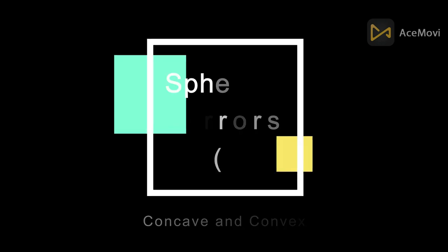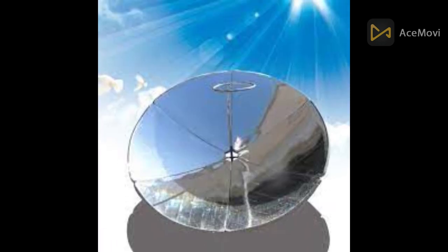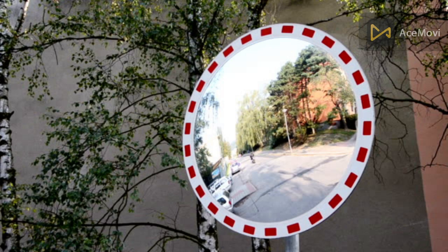Now we can know what are spherical mirrors. Spherical mirrors are mainly categorized into two groups: concave mirror and convex mirror. Let us first understand convex mirrors.